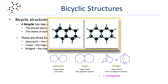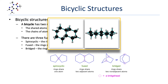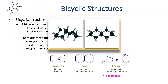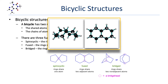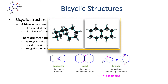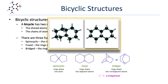Here are 3D models of the same fused bicyclic system. The two rings can be fused with either a cis or trans relationship. In the left model, you can see that the two hydrogens attached to the bridgeheads are oriented in the same direction, or cis. In the right model, you can see that these same two hydrogens are oriented in opposite directions, or trans.